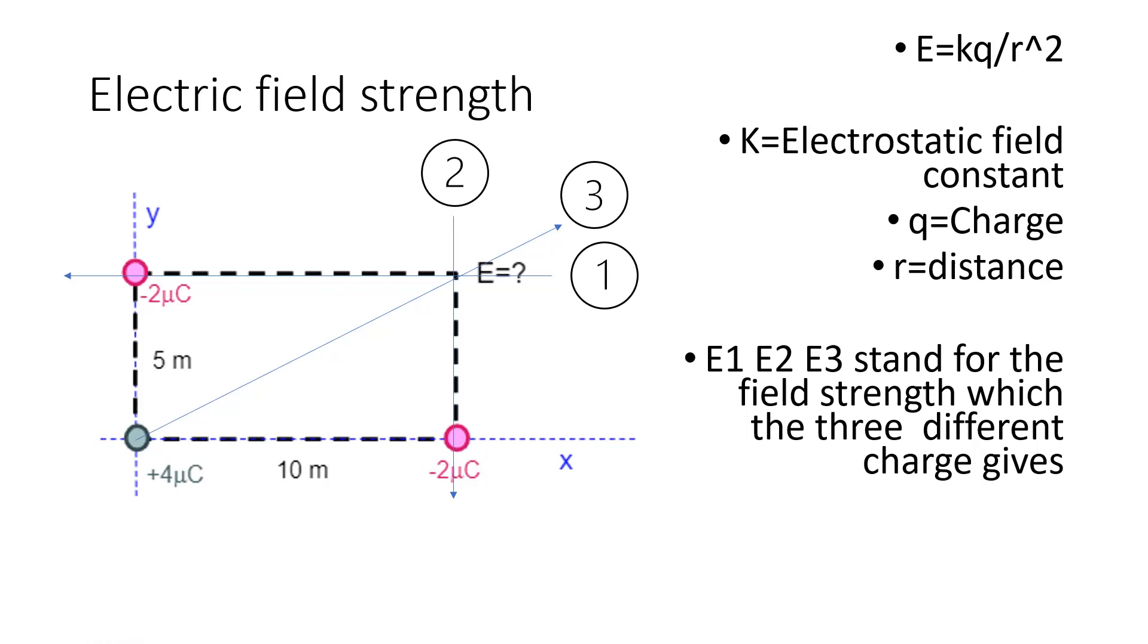Line three represents the E field contributed from the plus 4 micro coulomb charge at the center. Since the charge at the center is positive, the E field should point away from the charge.